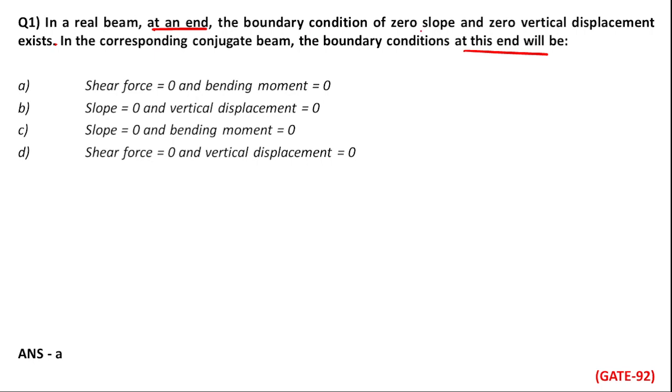Meaning, your real beam is slope zero and displacement zero. Slope zero and displacement zero. What condition will be in the conjugate beam? Shear force is equal to zero, bending moment is equal to zero.